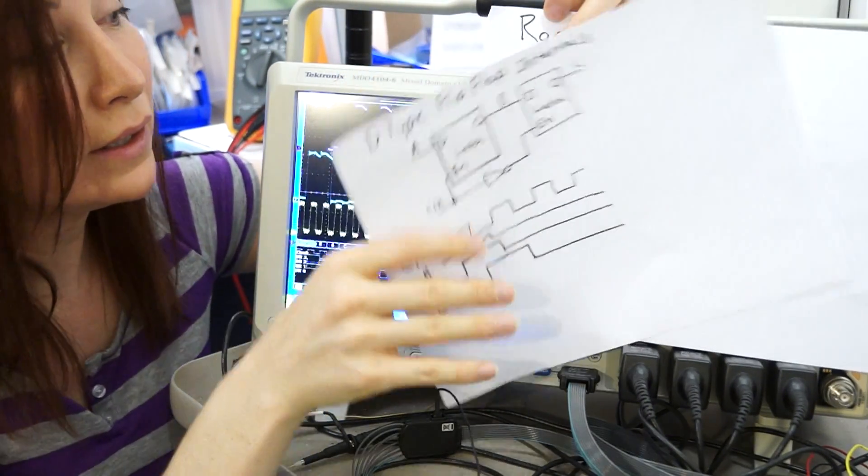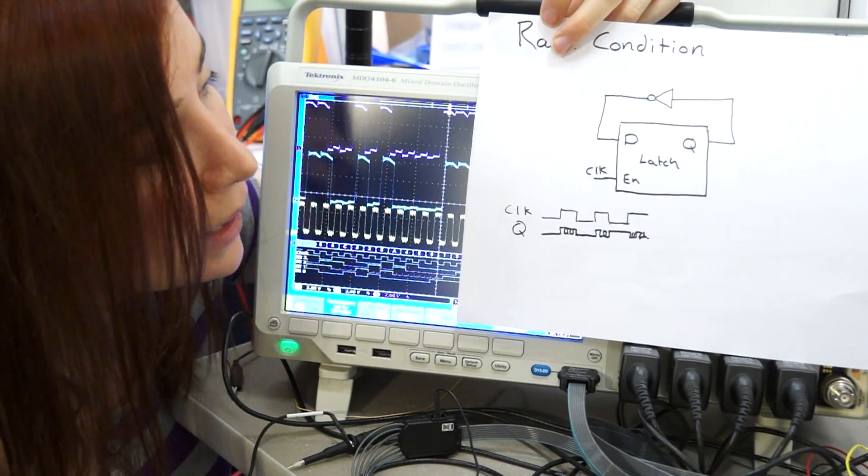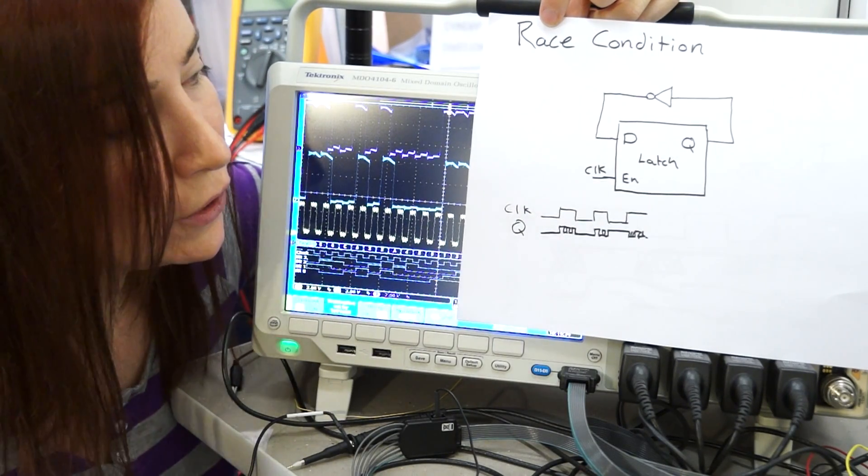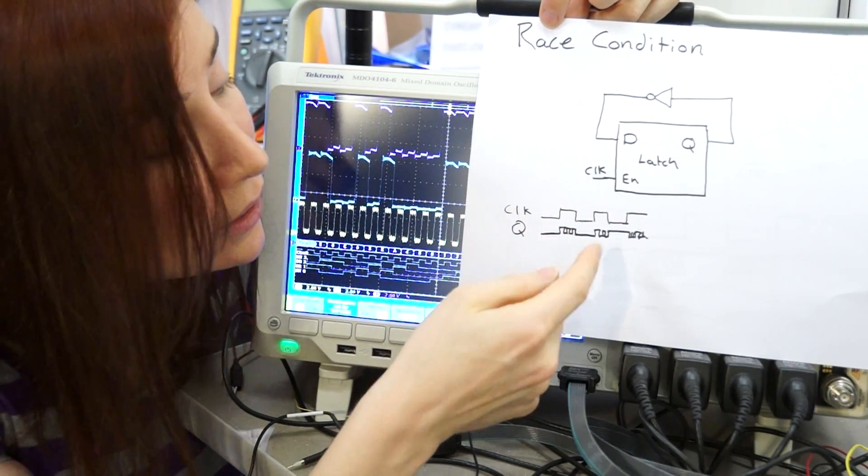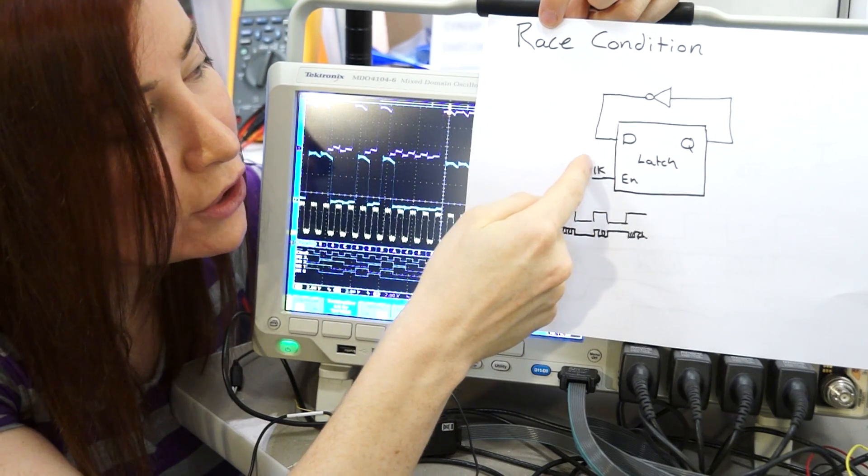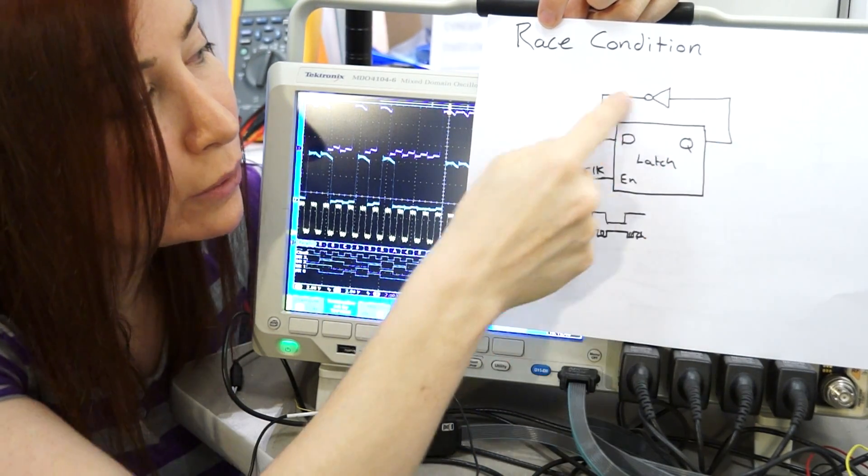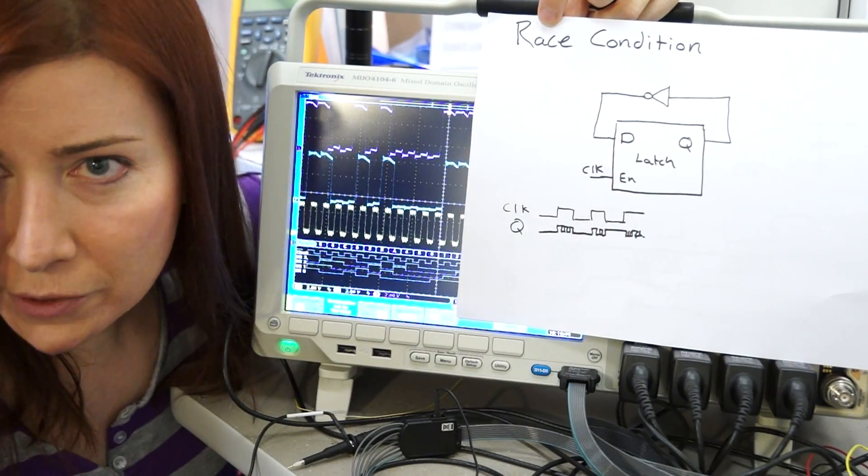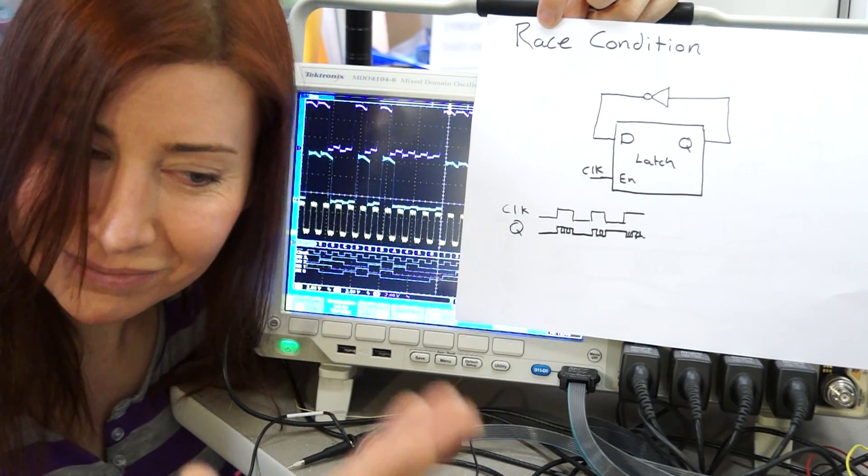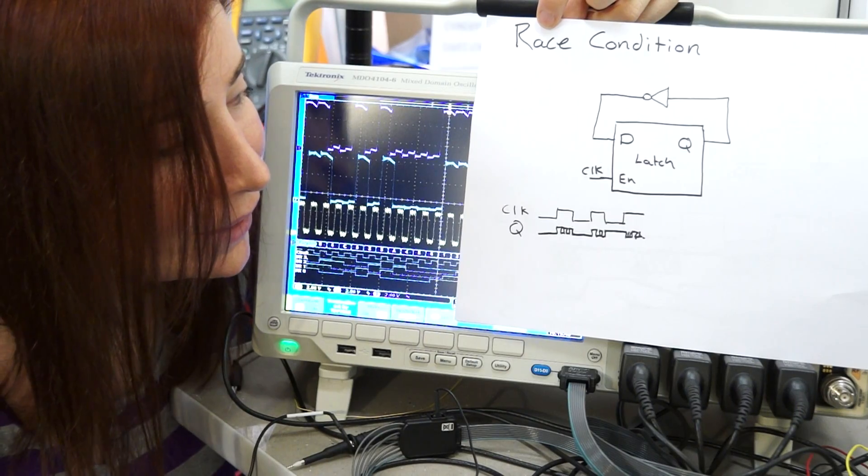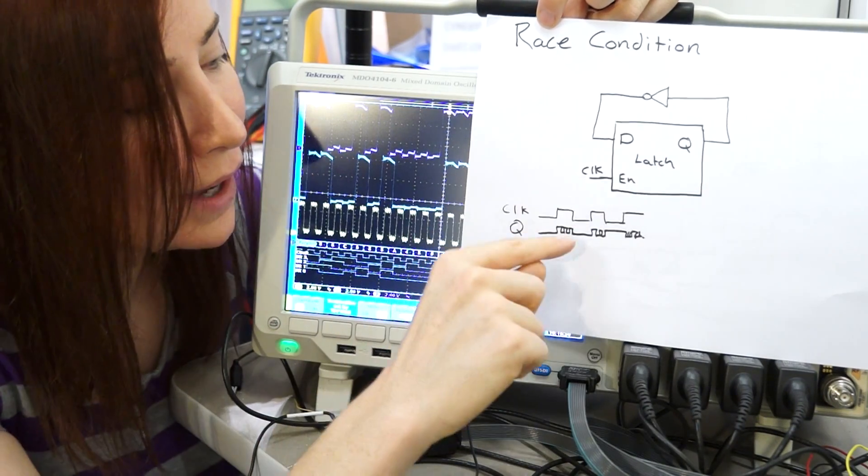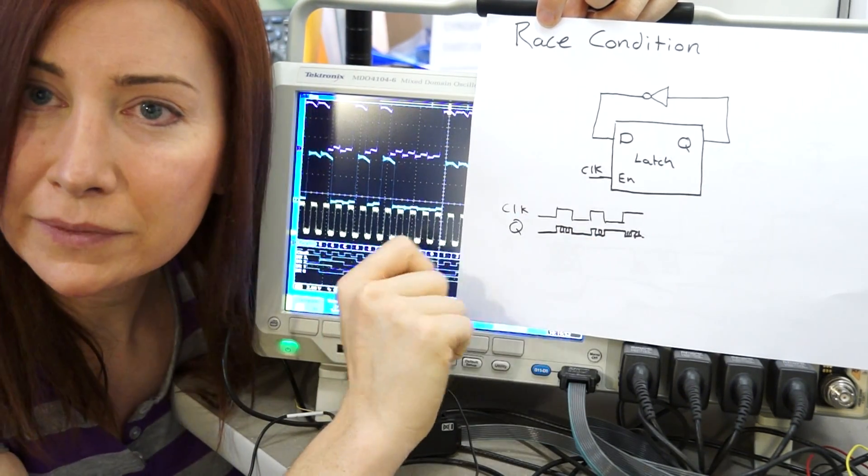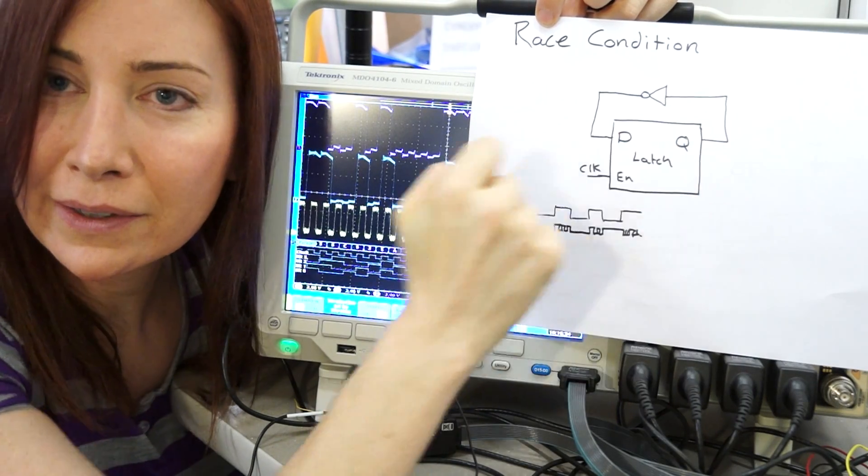So the reason that you do master-slave flip-flops is to prevent race conditions. So if you just used a transparent latch, you could end up with a condition where your input relies on your output, and since it flows through almost instantly to the delay of the latch, you can have wild oscillations happen if you have any kind of feedback output to input.